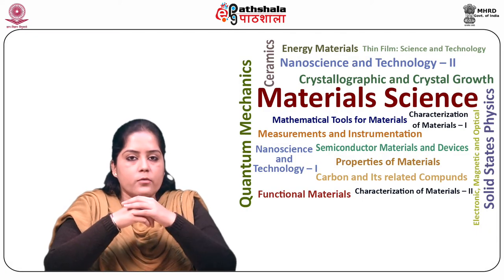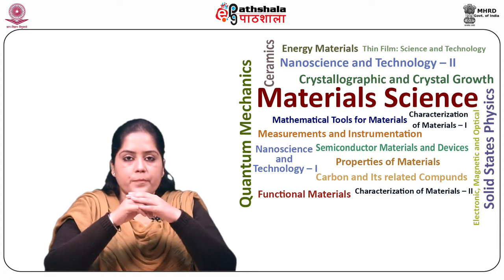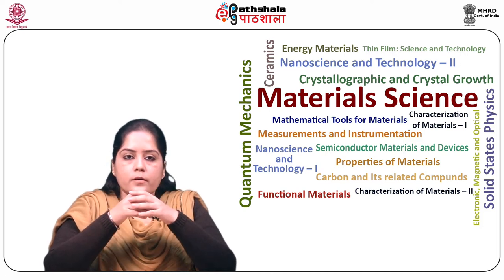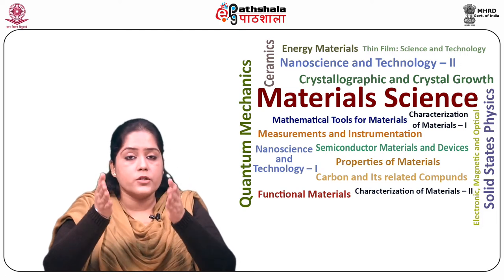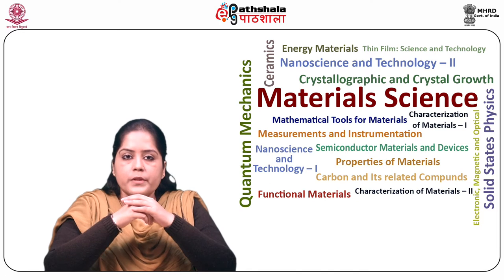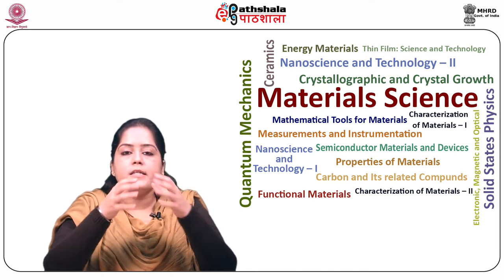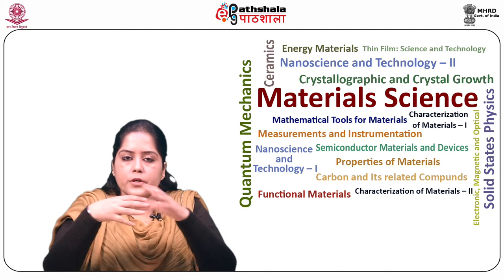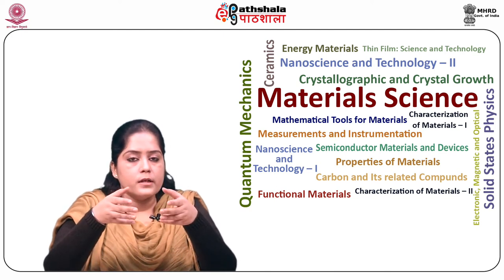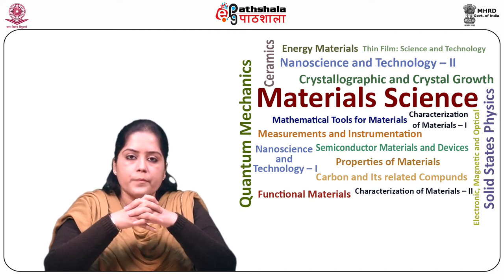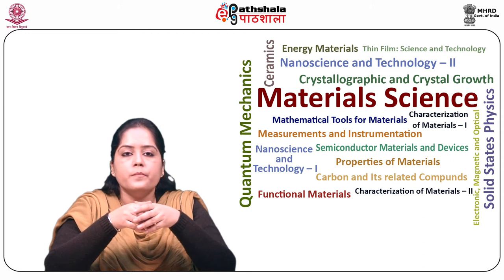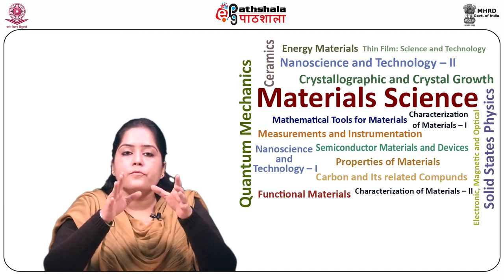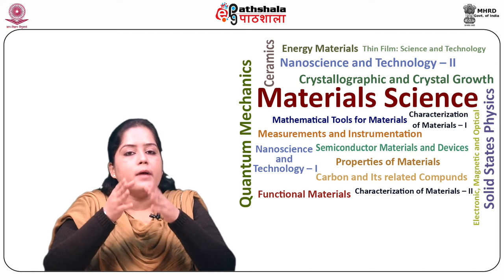Let us now discuss about the instrumentation of SEM. The basic components used in the electron optical system are: the source of electrons called the electron gun, lenses, scanning coils, detectors to collect the signals, sample stage, display and data output devices, infrastructure requirements, and the power supply. We should also have the vacuum system, the cooling system, a vibration-free floor, and a room which is free of electric and magnetic fields.